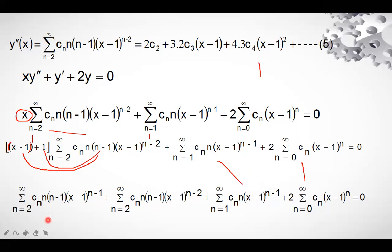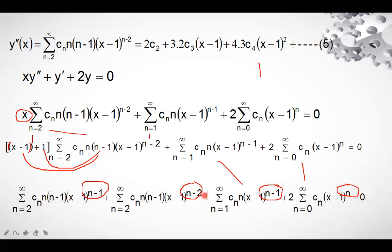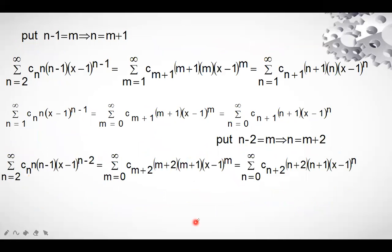Now we make all exponent powers unique. The four terms have powers (x−1)^(n−1), (x−1)^(n−2), (x−1)^(n−1), and (x−1)^n. To unify them, we introduce a dummy variable m. For the first term, let n − 1 = m so n = m + 1, giving Σ(m=1→∞) c_(m+1)·(m+1)·m·(x−1)^m. Replacing m back with n gives Σ(n=1→∞) c_(n+1)·(n+1)·n·(x−1)^n.